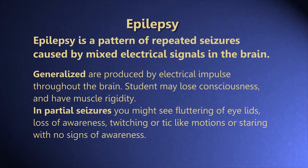Epilepsy is a pattern of repeated seizures caused by mixed electrical signals in the brain. There are many different types of seizures. Generalized seizures are produced by electrical impulses throughout the brain — a student may lose consciousness or have muscle rigidity, such as a grand mal seizure. In partial seizures, you might see fluttering of the eyelids, loss of awareness, twitching or tick-like motions, or staring with no signs of awareness.